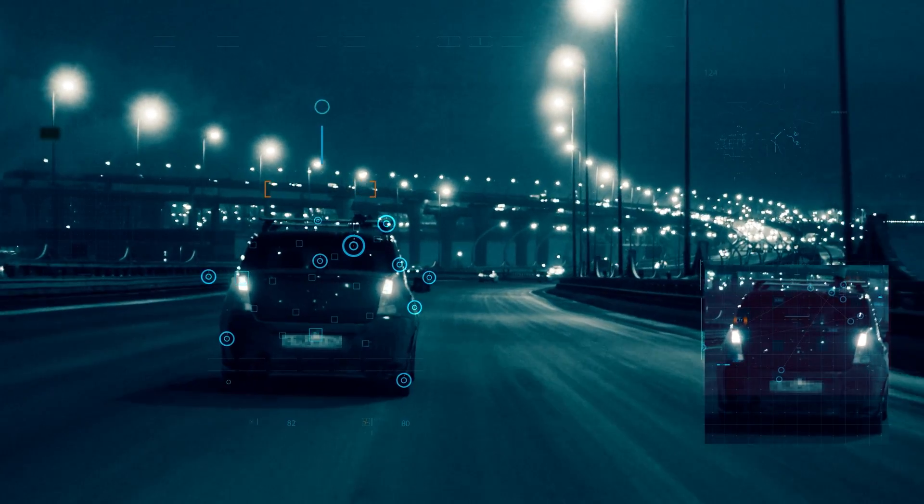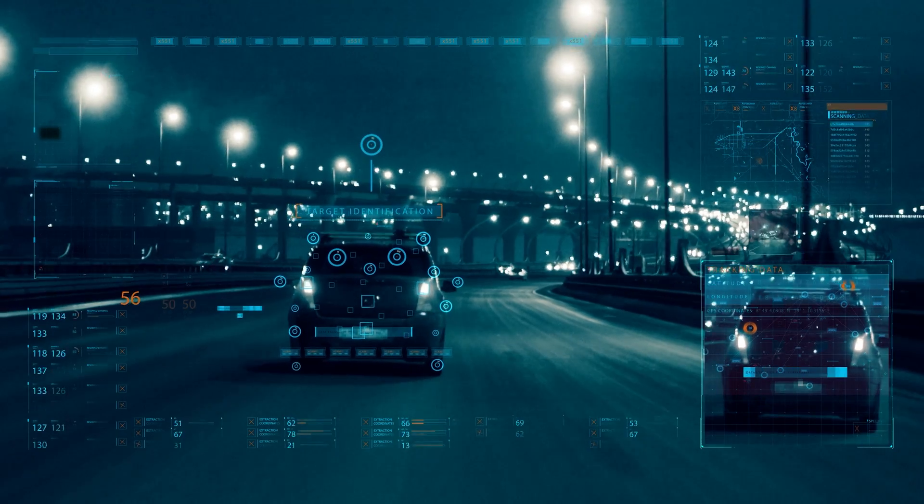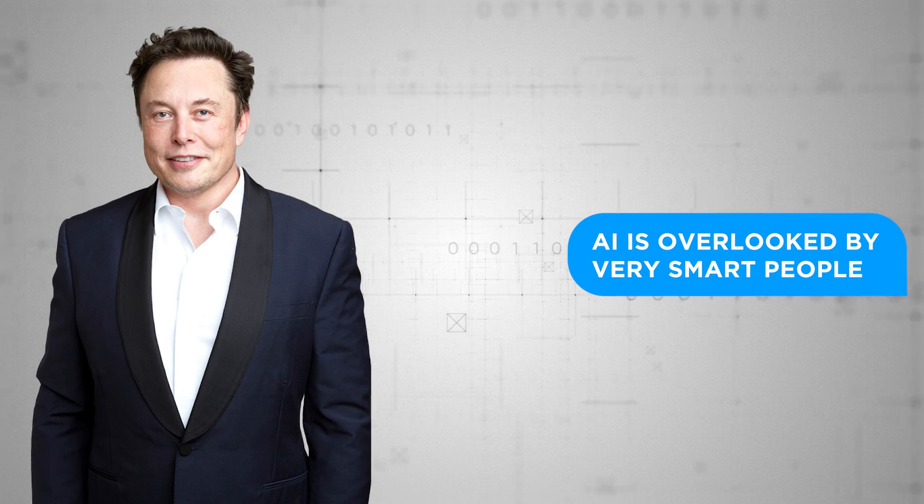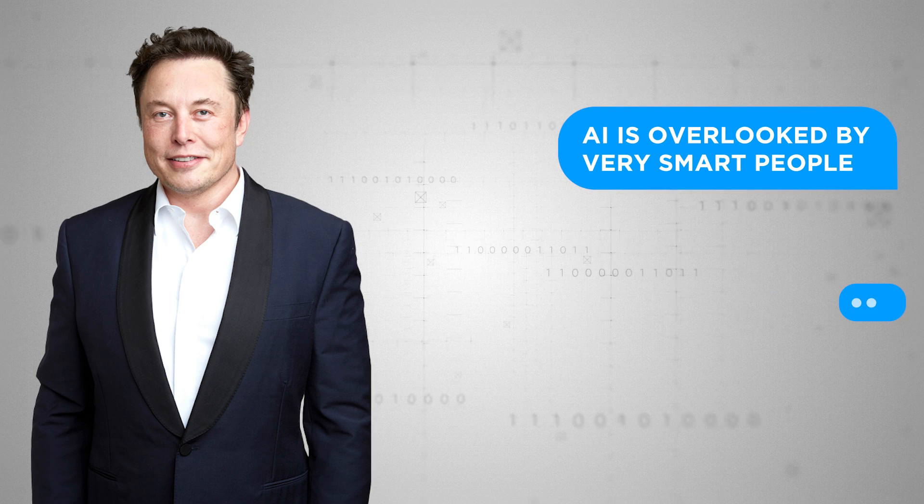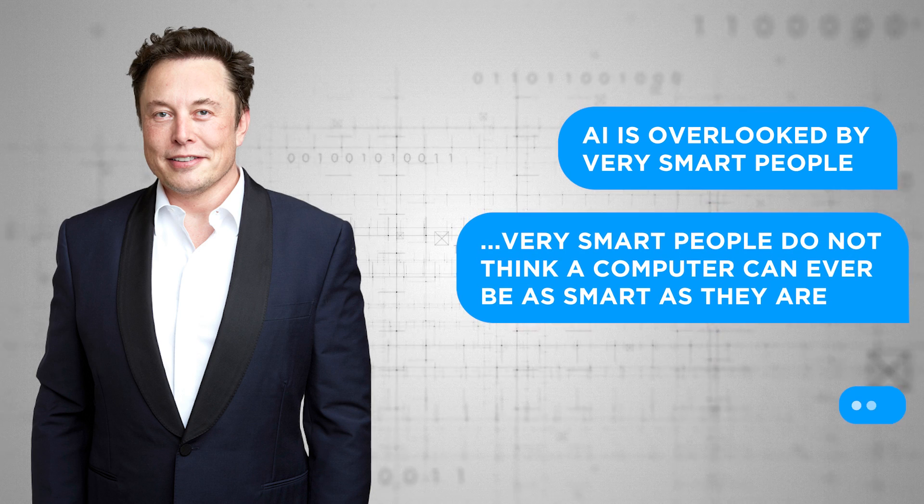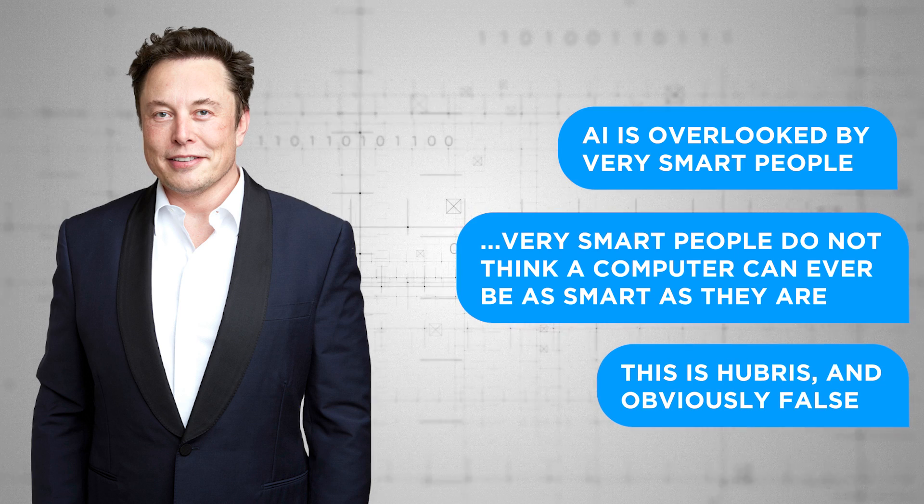The first thing you should know is that tech colossus Elon Musk is terrified about the rise of AI, or artificial intelligence. AI is overlooked by very smart people, he's said before. That's because, in his view, very smart people do not think a computer can ever be as smart as they are. This is hubris, and obviously false.